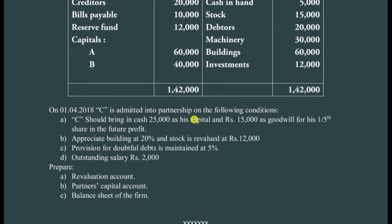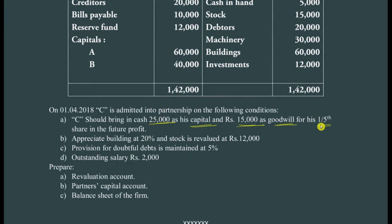On 1st April 2018, C is admitted into partnership on the following conditions: C should bring cash of 25,000 rupees as capital and 15,000 as goodwill. They are sharing one-fifth share in the future profit.